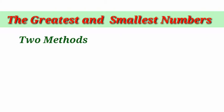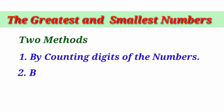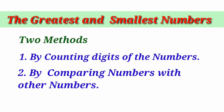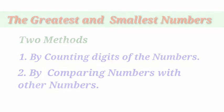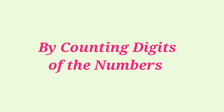First method: by counting the digits of the numbers. Second method: by comparing numbers with other numbers. Let us see the first method — by counting digits of the numbers.